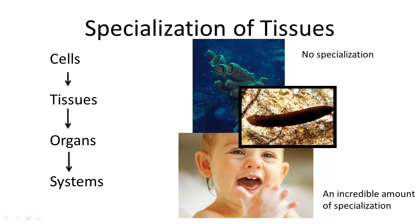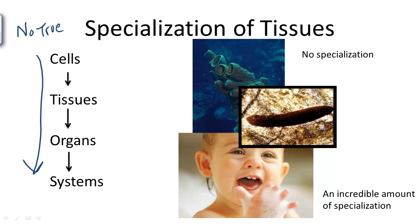What is the specialization of tissues? The specialization of tissues is the process of organisms evolving from having no true tissues to having increasingly complex anatomies, with increasingly specialized cells, tissues, organs, and systems.